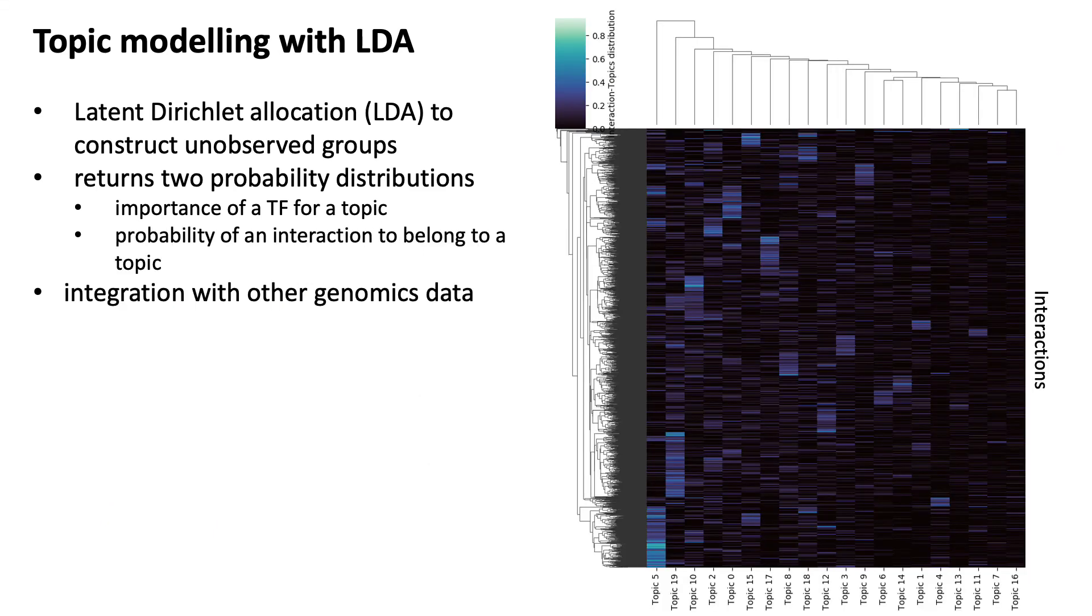Topic modeling also returns the probability of an interaction to belong to a topic, so for each interaction it says which topic describes this interaction the best. And this can help, as shown on the right, to cluster interactions together which are assigned to similar topics. And with this you can further characterize these interactions by integrating other genomics data. Maybe are there other features that are similar among these interactions?